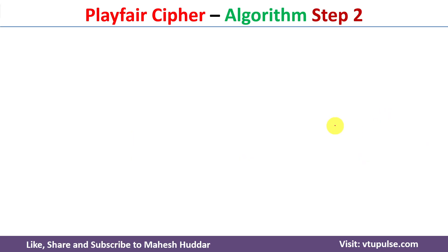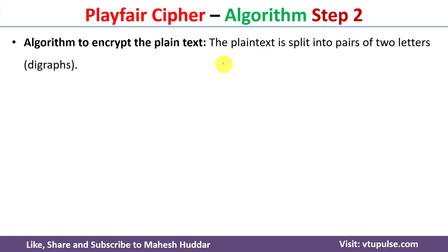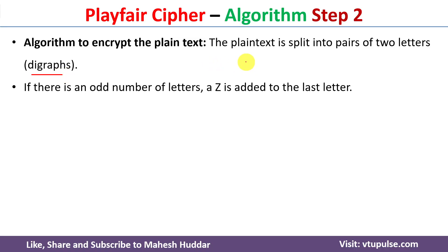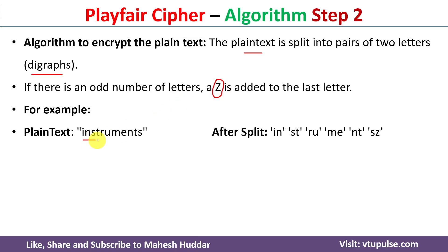Once the key square is available, the next step is to encrypt the plaintext. The plaintext is split into pairs of two letters, also known as digraphs. There are a few rules to follow. Whenever the plaintext has an odd number of letters, we need to add one extra letter Z. Because if you have an odd number of letters, the last pair will consist of only one letter. For example, if 'instruments' is the plaintext, the pairs are IN, ST, and so on, and the last letter S gets Z appended to complete the pair.